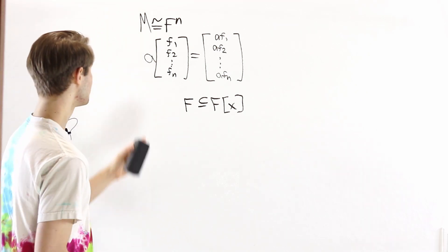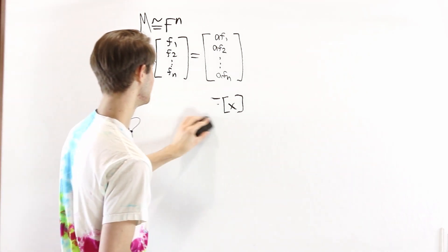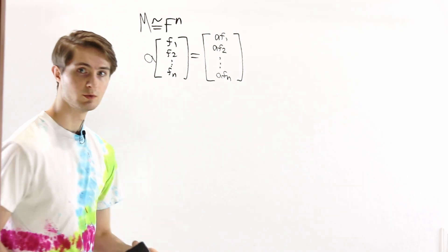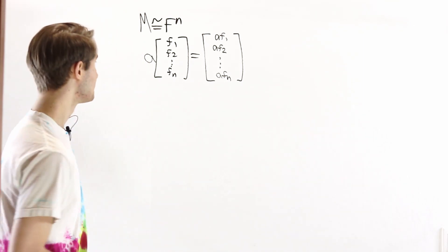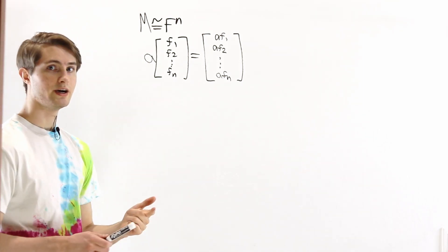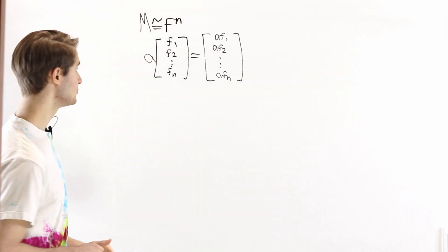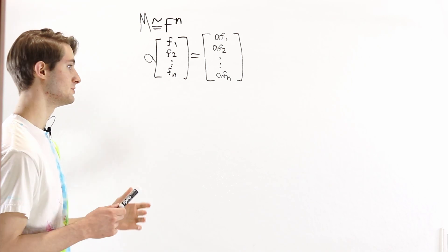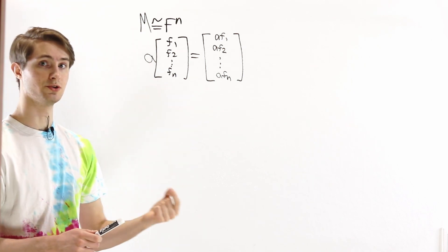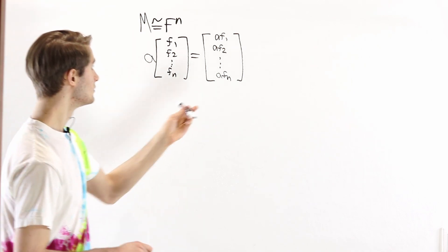We already showed what happens when we multiply by an element of a field when we're looking at a vector space. All we have to do now is figure out what happens when we multiply by x. So let's look at the module axioms to get some information about what happens when we multiply by x.